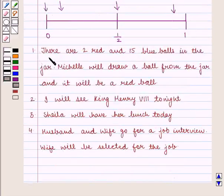First part: there are 2 red and 15 blue balls in the jar. Michelle will draw a ball from the jar and it will be a red ball. Second, I will see King Henry VIII tonight. Third, Sheila will have her lunch today.